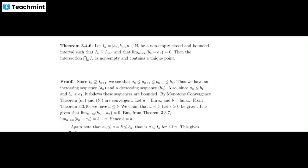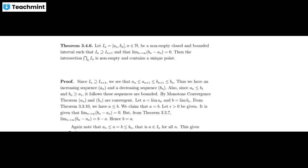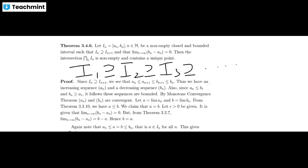What is the Nested Interval Property? We consider a sequence of nested intervals — a decreasing sequence — such that interval I₁ contains I₂, which contains I₃, and so on. We consider closed, bounded, and non-empty intervals, where aₙ ≤ bₙ. The additional hypothesis is that the length of these intervals must go to zero as n tends to infinity.